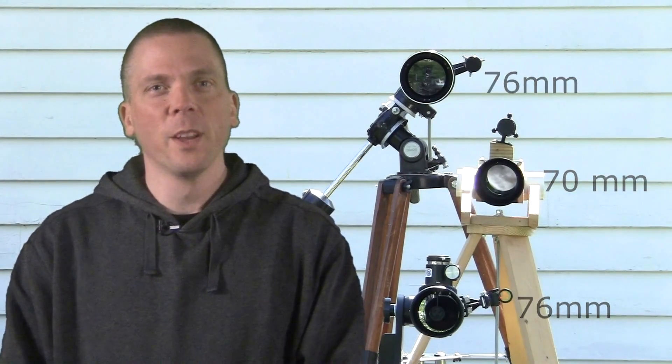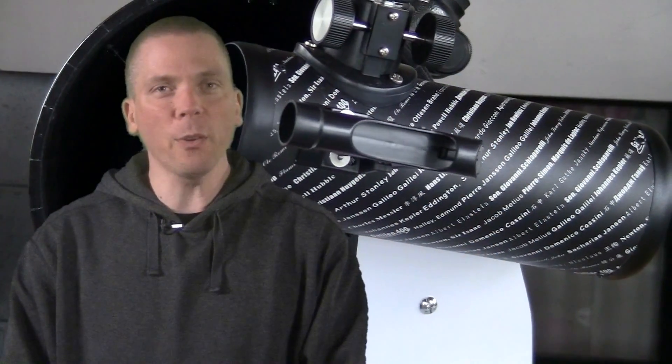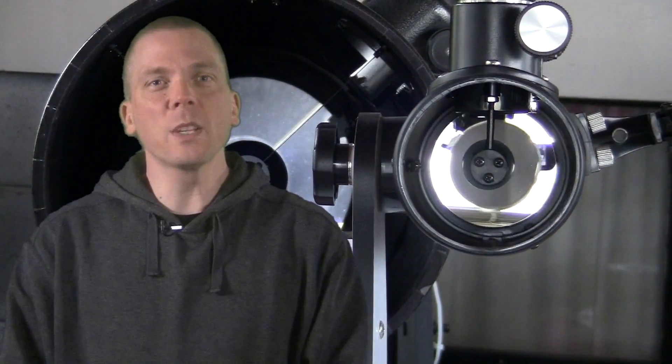So why does that matter? Well, when we talk about how powerful a telescope is, or can be, what we really mean is how much light it gathers. There is a reason why the Hubble Space Telescope has a large mirror, and other ground-based telescopes are measured in meters, not millimeters or feet. Larger aperture gathers more light, and that allows us to see dimmer objects and increases the resolution of the optical instrument.